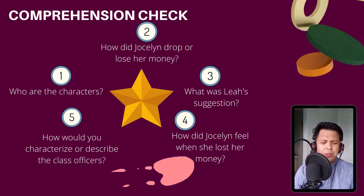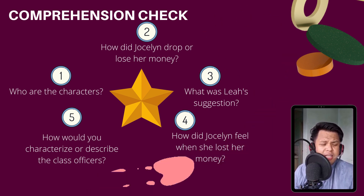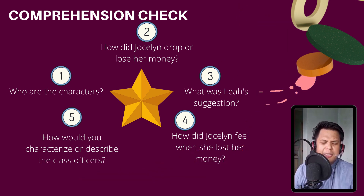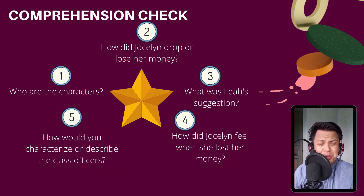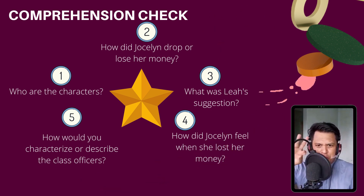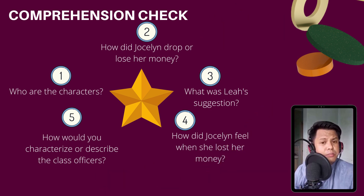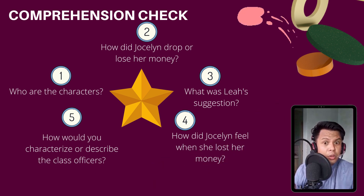For question number two: how did Jocelyn drop or lose her money? Based on the text, the first reason is Jocelyn did not bring her wallet. Second, after receiving the change from the canteen, she directly put the money inside her pocket.